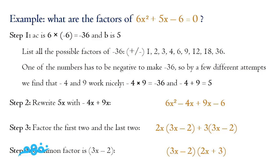The whole expression becomes 2x(3x minus 2) plus 3(3x minus 2). We can see that (3x minus 2) is itself a common factor, so the final factored form is (3x minus 2)(2x plus 3). These are the two factors of this equation.